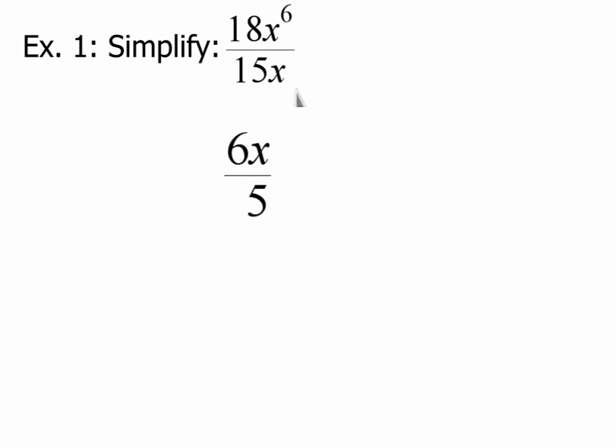And then if I do x to the 6th divided by x, you'll think x is x to the 1st. And exponent rules tell me that when we divide, we subtract. 6 minus 1 gets me 5. So this becomes 6x to the 5th over 5.